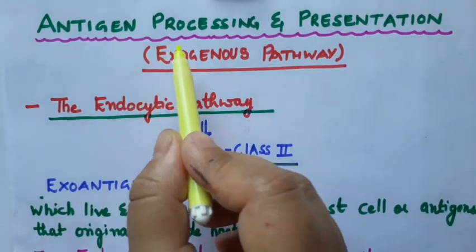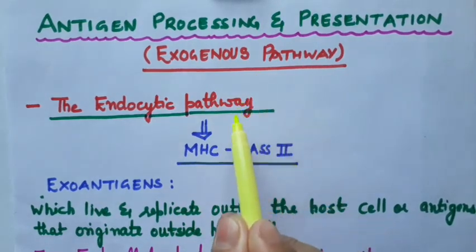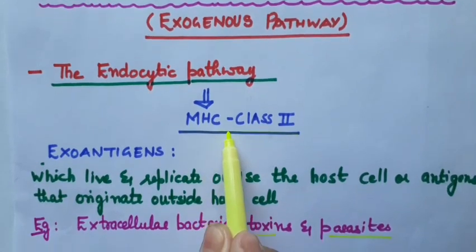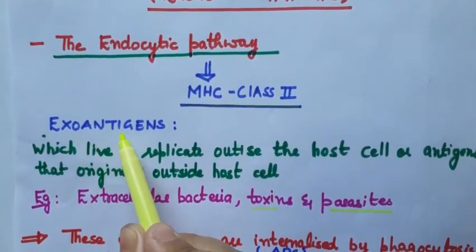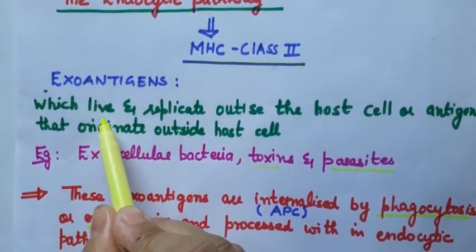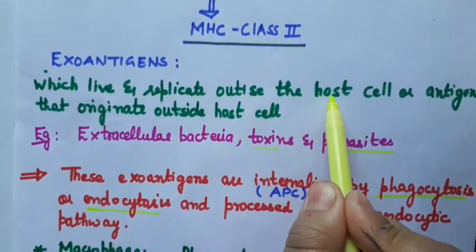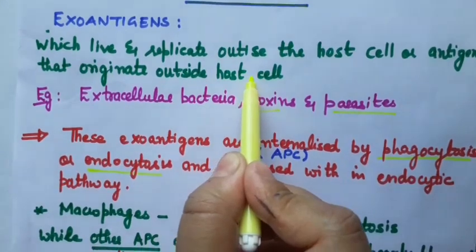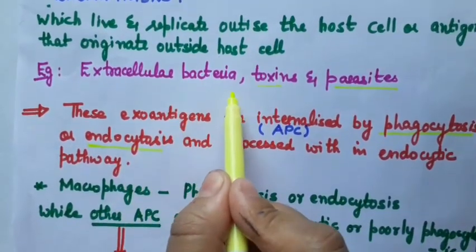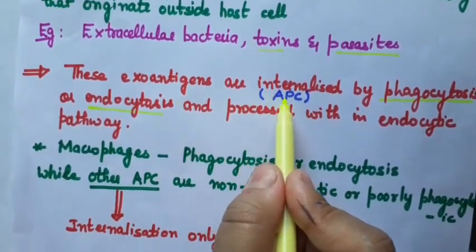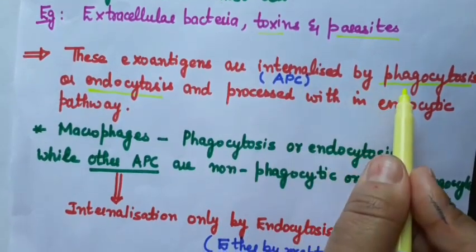In this lecture we will discuss the process in detail. This pathway is also known as the endocytic pathway, comprising MHC class 2 molecules. Exoantigens are those antigens which live and replicate outside the host cell — antigens that originate outside the host cell — for example, extracellular bacteria, toxins, and parasites.